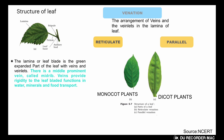In reticulate venation, there is one midrib from which branches spread out in a net-like pattern. This kind of venation is called reticulate venation, which is seen in dicot plants. Parallel venation, also called net venation, is seen in monocot plants.